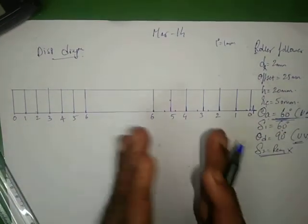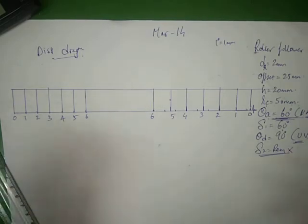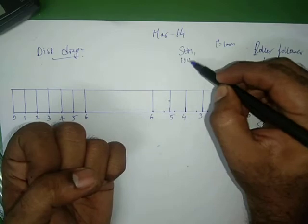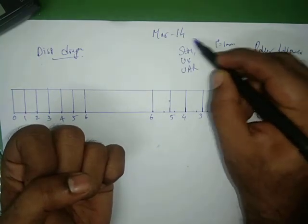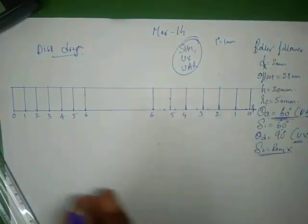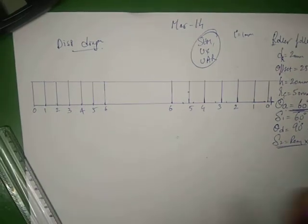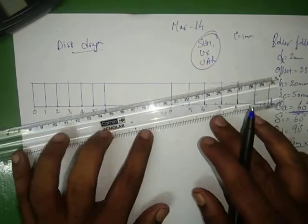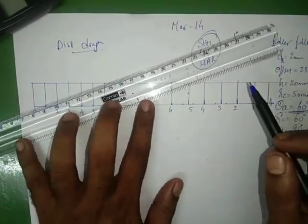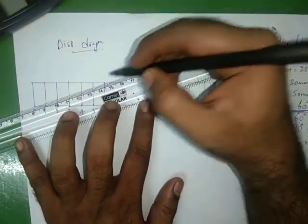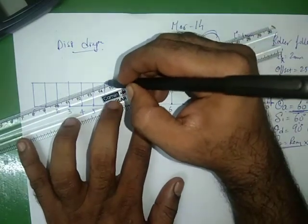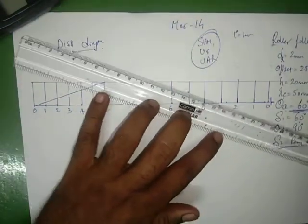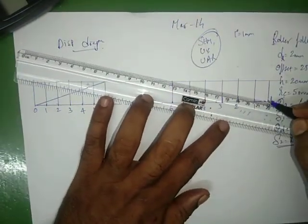These three motion types — simple harmonic motion, uniform velocity, and uniform acceleration and retardation — all follow the same division approach. For UAR: rise goes from 0 to 6, and fall goes from 6 to 0.